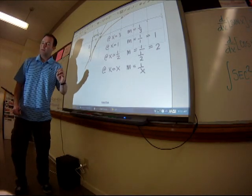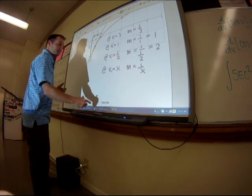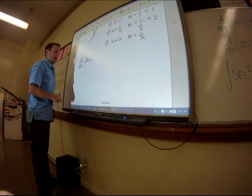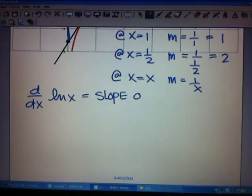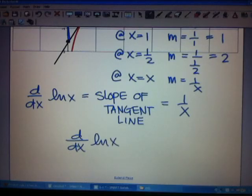That is essentially the rule for the derivative of a natural log, because the derivative is slope. So the derivative of the natural log of x is the same as the slope of the tangent line, which is one over x. That's the rule we're going to be using: the derivative of ln(x) is one over x.